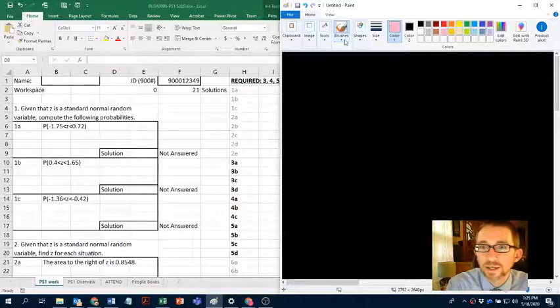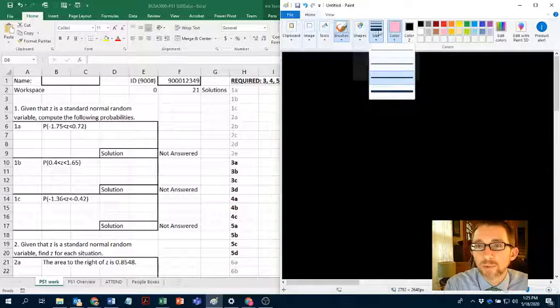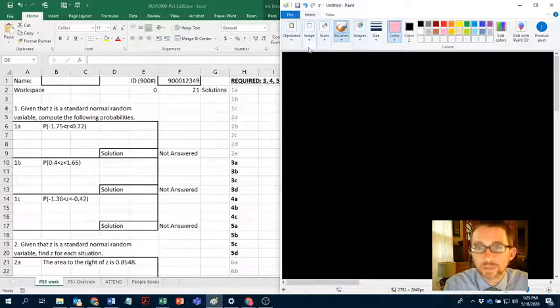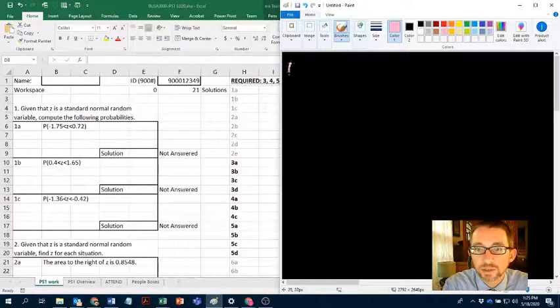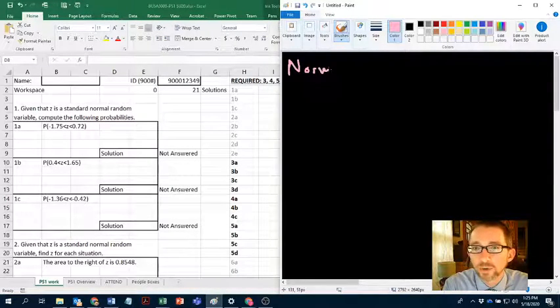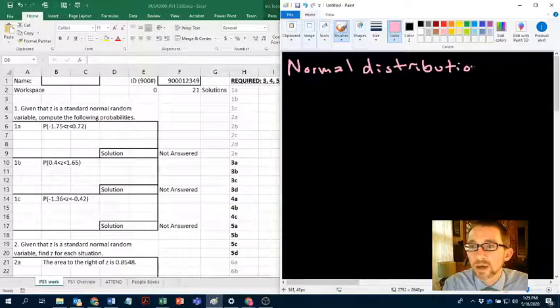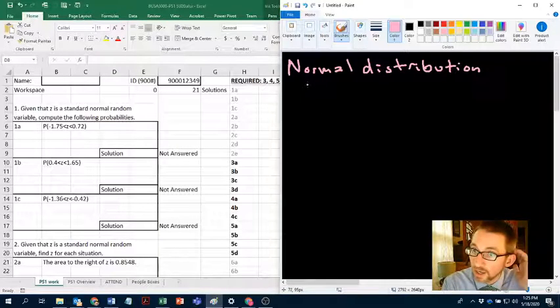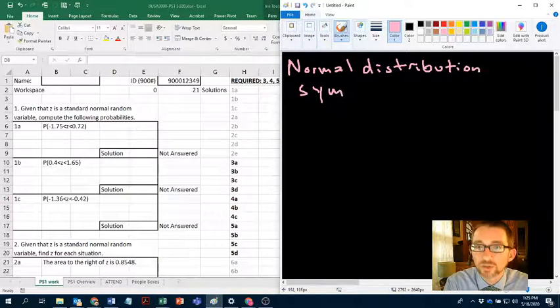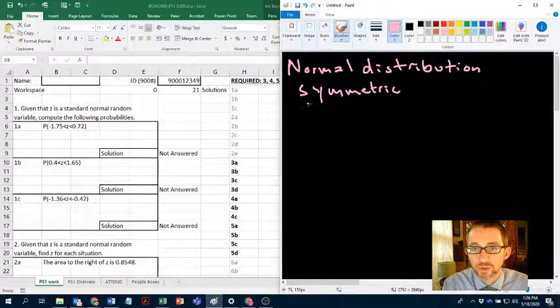We talked already about probability and we talked about continuous probability distributions, but just to refresh your memory, we're going to talk today about the normal distribution. Normal distribution is a continuous probability distribution. It has some properties. It is symmetrical, and that's not true for every continuous distribution.